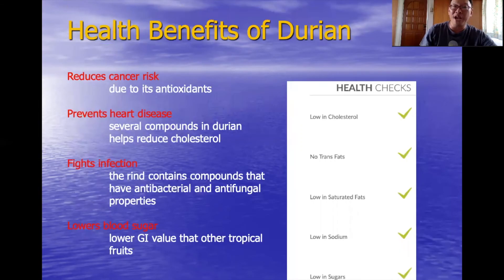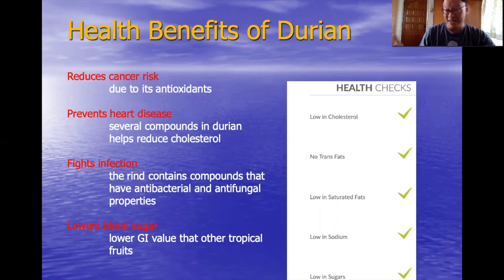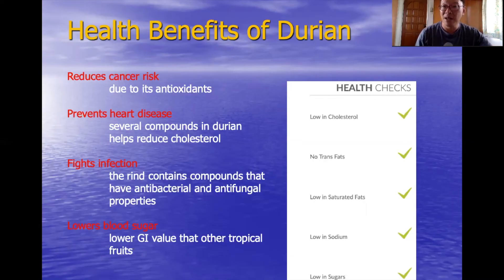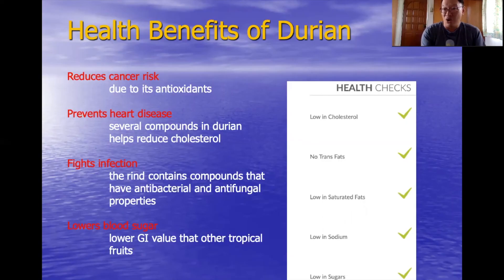The health benefits of durian: firstly, it reduces the risk of cancer due to its high antioxidant content. It prevents heart disease because several compounds in durian help reduce cholesterol and it itself has zero cholesterol. It fights infection because compounds in the rind have antibacterial and antifungal properties. It lowers blood sugar levels due to its low GI value compared to other tropical fruits. Health check summary: low or no cholesterol, no trans fat, low saturated fats, low in sodium, and low in sugar.